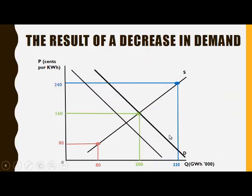Now we consider a decrease in demand, where there is a leftward shift of the demand curve. At the original equilibrium price of 160, the quantity demanded is now 120, while the quantity supplied is still 200.